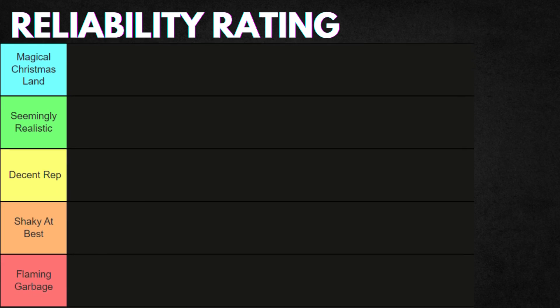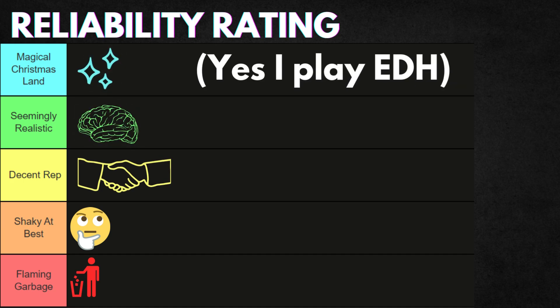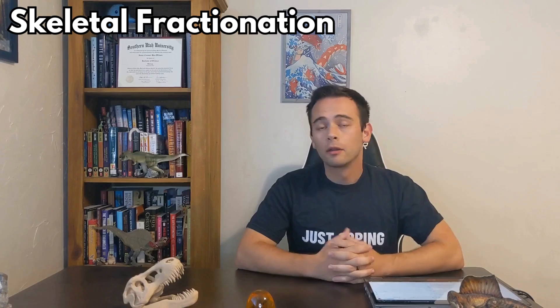Each method will be given a reliability rating from 1 to 5. Our options are: the flaming garbage tier, the shaky at best tier, the decently representative tier, the seemingly realistic tier, and the magical Christmas land tier.